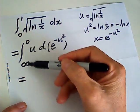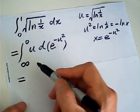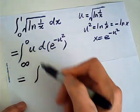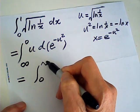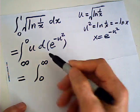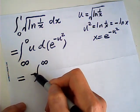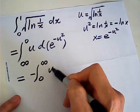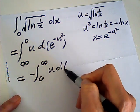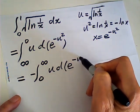Now first let me exchange the boundary from 0 to infinity. It looks better from 0 to infinity. Then I have a negative sign. And u times d of e to the negative u squared.